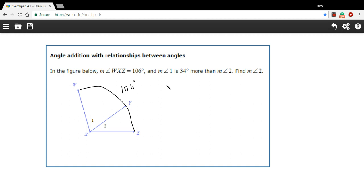So now we've got that in our diagram, and then, well, it says angle 1 is 34 more than measure of angle 2, but I'm not sure exactly how to write that yet, and it says to find the measure of angle 2.